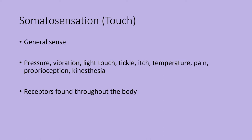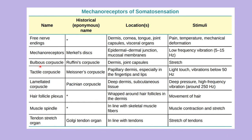Touch is a general sense, not a special sense. The various receptors are located throughout the body. Touch picks up pressure, vibration, itch, pain, light touch, and temperature — including cold and hot. These receptors are very specific. The table shows the names of the cutaneous receptors that pick up these various touch sensations, where they are located, and what stimulates them.